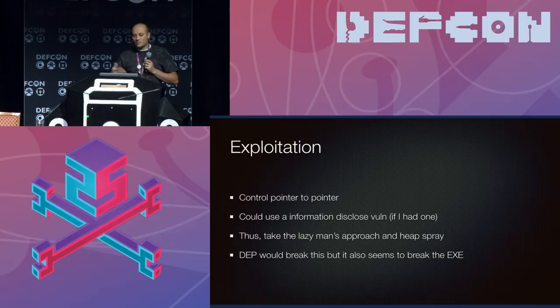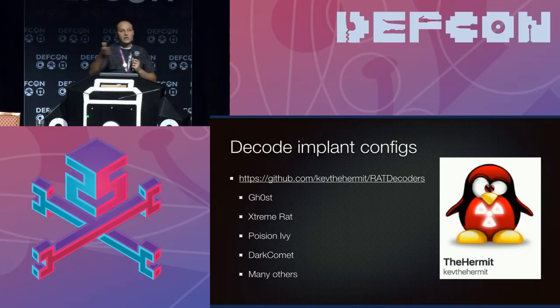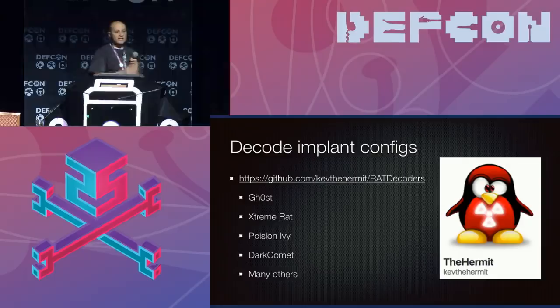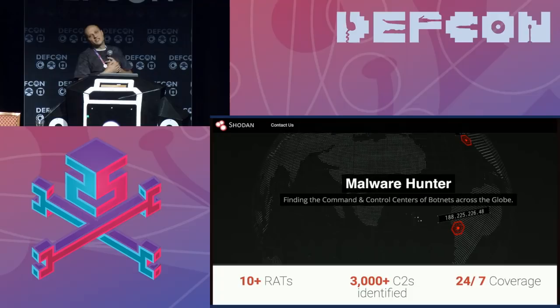Before the demo, I want to mention a researcher called Kev the Hermit who wrote config decoders for Ghost RAT and Extreme RAT. If you're given a malware sample from one of these families, you can run the script on it to extract the C2 address and other configuration data. So if you're the victim of one of these attacks and find the malware file, you can pass it to the script, find the C2 server address, and use Metasploit to attack back. If you're too impatient to wait to be attacked, you can search VirusTotal for samples or use Shodan's Malware Hunter feature, which specifically lists Ghost RAT C2 servers.